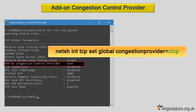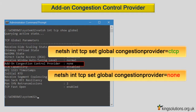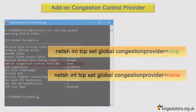netsh int tcp set global congestionprovider=ctcp and press enter. If performance is worse, turn it off entirely. Enter: netsh int tcp set global congestionprovider=none and press enter. Do not forget to reboot your system for the change to take effect.